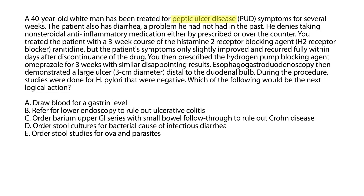A 40-year-old man has been treated for peptic ulcer disease for several weeks and also has new-onset diarrhea. He denies taking NSAIDs. Treatment with a three-week course of the H2 blocker ranitidine only slightly improved symptoms, which fully recurred after discontinuation. Omeprazole for three weeks yielded similarly disappointing results. EGD demonstrated a large ulcer distal to the duodenal bulb, and studies for H. pylori were negative. Since basic medications and H. pylori treatment have failed, another etiology must be considered. The next logical action is to obtain a serum gastrin level.